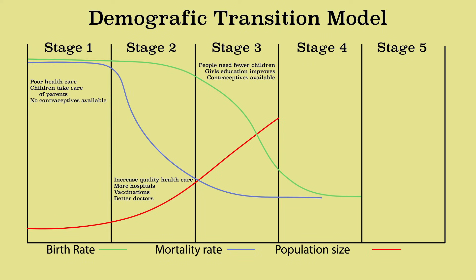In phase four, there is a low birth rate and a low mortality rate. The natural population growth is low again, as a result of which the population size hardly grows. Many developed countries meet this description, such as the Netherlands.